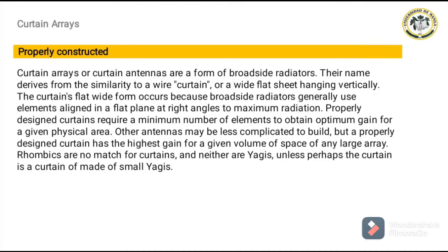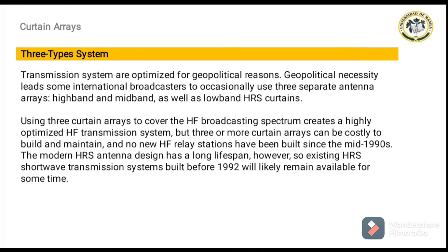Curtains are no match for rhombics, and yagis are no match for curtains, unless the curtain is made of tiny yagis. The three-type transmission system is optimized for geopolitical results. The geopolitical necessity leads some international broadcasters to occasionally use three separate antenna arrays — high band, mid band, as well as low band HRS curtains. Using three curtain arrays to cover the HF broadcasting spectrum creates a highly optimized HF transmission system, but three or more curtain arrays can be costly to build and maintain, and no new HF relay stations have been built since the mid-1990s.